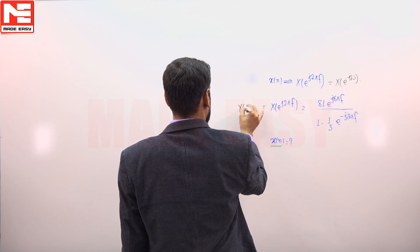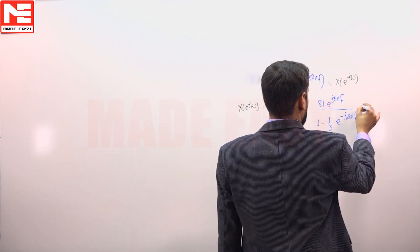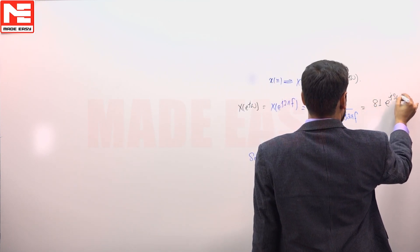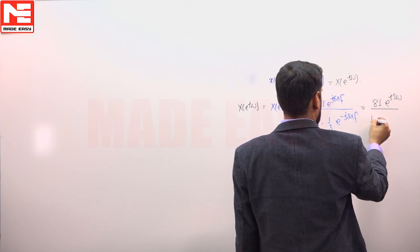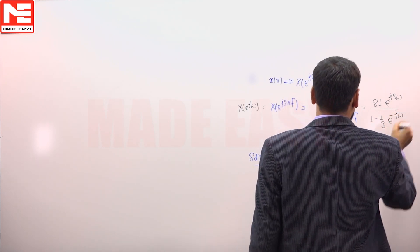So discrete time Fourier transform of signal x of n is 81 e^(j3ω) divided by 1 minus 1 by 3 e^(-jω).